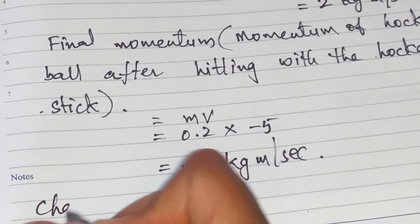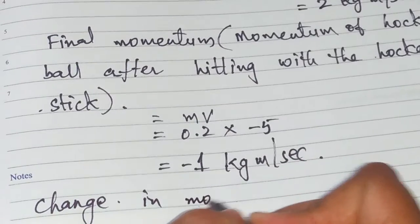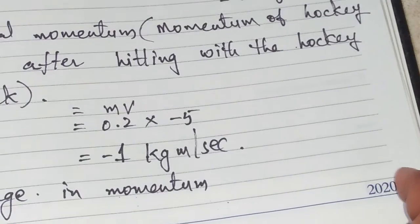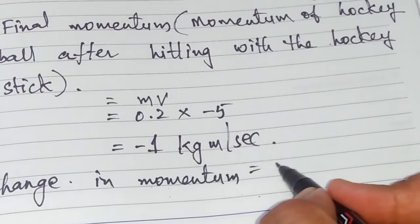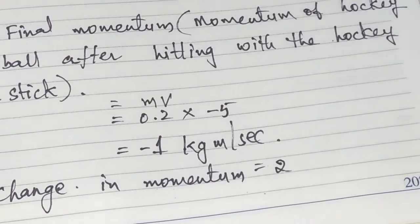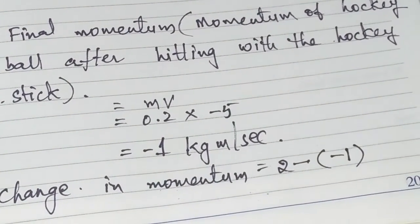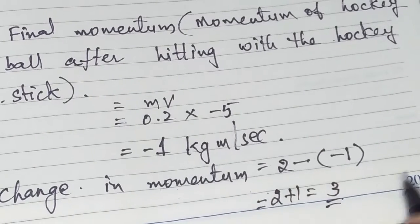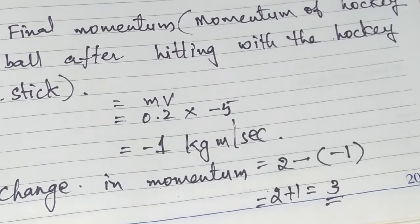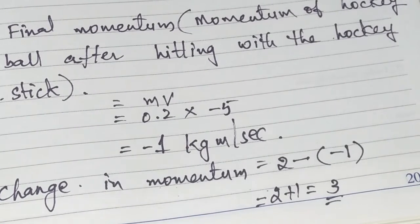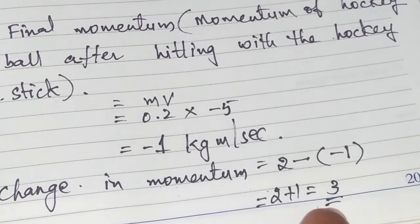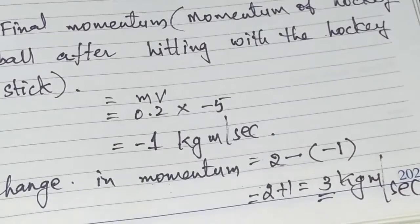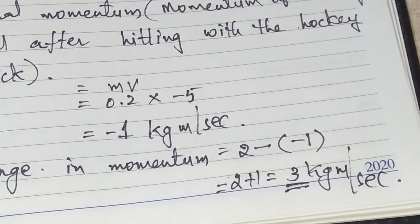Many students make a mistake here — they see 1 and 2 and say the answer is 1. But that is wrong. Change in momentum equals initial momentum minus final momentum: 2 minus (minus 1), which becomes 2 plus 1 equals 3. The change in momentum is 3 kg·m/s.